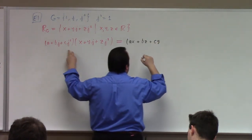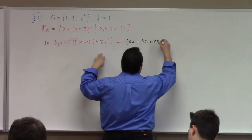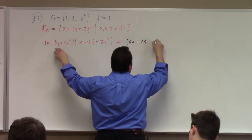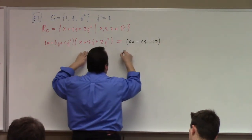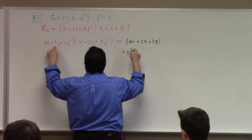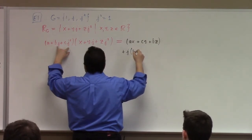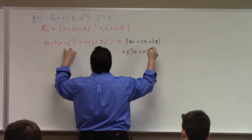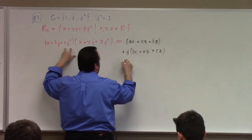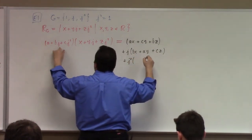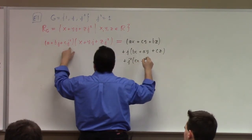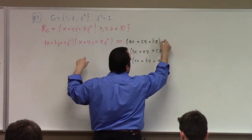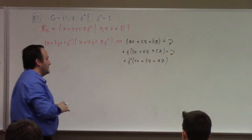Let me write that — I'm going to write CY plus BZ. I'm going to try to write XYZ every time. Plus J: I get a J from BX, from A times Y, and from J squared times J squared which is CZ. And for J squared: CX, BY, and finally AZ. So there's your ring multiplication.